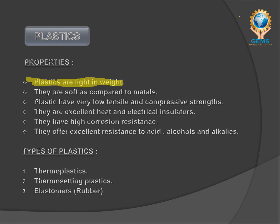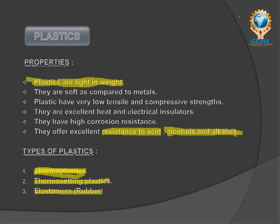Plastics have high corrosion resistance. For example, if you keep a bullet bike in the rain for a month, rusty things form on top. But if you keep a bike with only plastic parts for about six months, only dust will be there — just wipe it and no corrosion happens. They also offer excellent resistance to acids and do not react with alcohol. The types of plastics are: thermoplastics, thermosetting plastics, and elastomers (rubber), which will be discussed in upcoming slides and the next video.